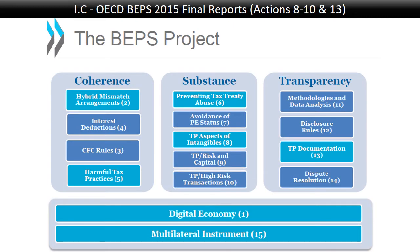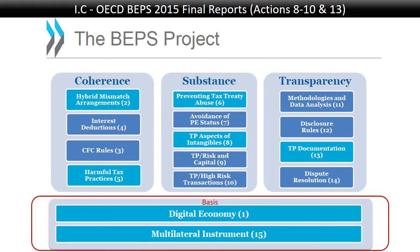Let us talk about the BEPS project. Just to refresh everyone's memory, the BEPS project consisted of 15 actions by the OECD. It was a two and a half to three year project in which it determined how to fix the international tax system, and basically the BEPS project can be divided into two major components.